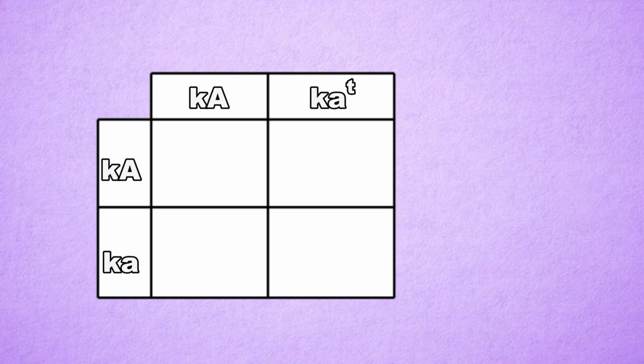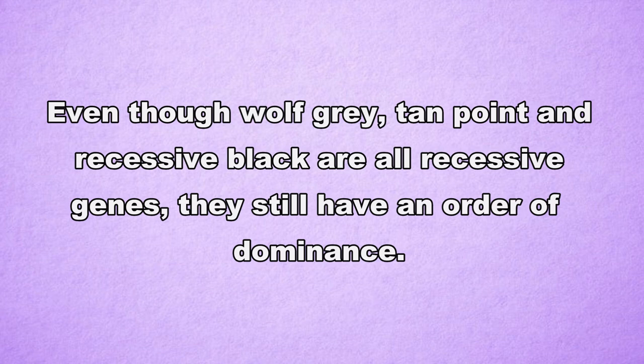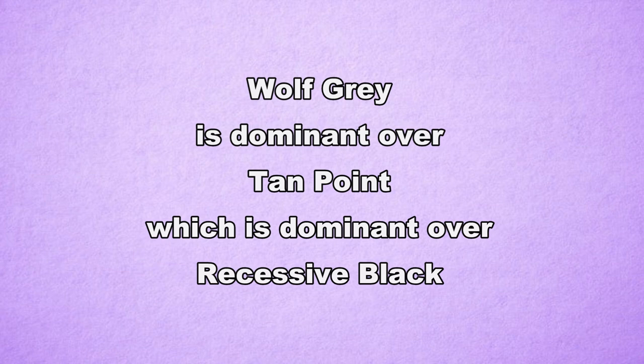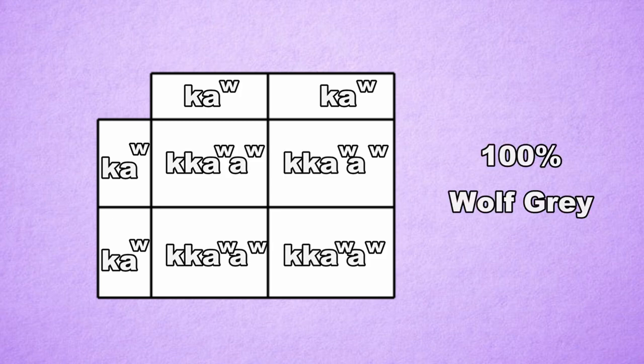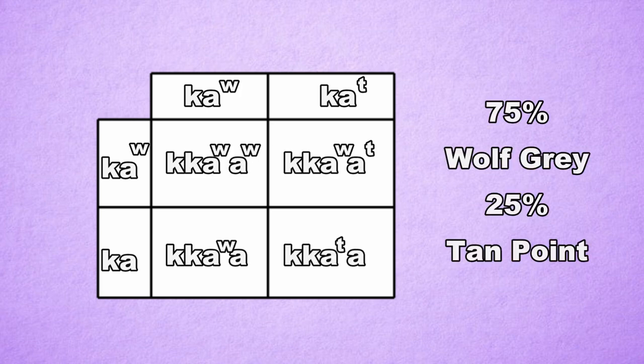What would happen if a heterozygous sable carrying tan point mated with a heterozygous sable carrying recessive black? When we put it in our Punnett square, we get four results: 25% of the puppies would be homozygous sable, 25% would be heterozygous sable with tan point, 25% would be heterozygous sable with recessive black, and 25% would be heterozygous tan point carrying recessive black. When results like Little a-w / Little a-t, or Little a-t / Little a occur, we have to refer to which gene is dominant over the other, despite being recessive genes. Wolf gray is dominant over tan point and recessive black, and tan point is dominant over recessive black. So if two homozygous wolf grays mated, all their puppies would be wolf gray. If a heterozygous wolf gray carrying tan point mated with a heterozygous wolf gray carrying recessive black, the results would be 25% homozygous wolf gray, 25% heterozygous wolf gray with tan point, 25% heterozygous wolf gray with recessive black, and 25% heterozygous tan point with recessive black.